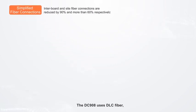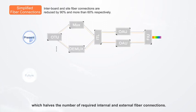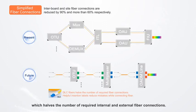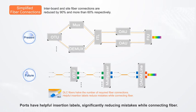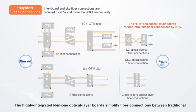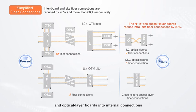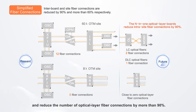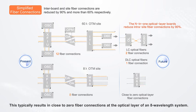The DC908 uses DLC fiber, which reduces the number of required internal and external fiber connections. Ports have helpful insertion labels, significantly reducing mistakes while connecting fiber. The highly integrated N-in-one optical layer boards simplify fiber connections between traditional and optical layer boards into internal connections, reducing the number of optical layer fiber connections by more than 90%. This typically results in close to zero fiber connections at the optical layer of an 8-wavelength system.